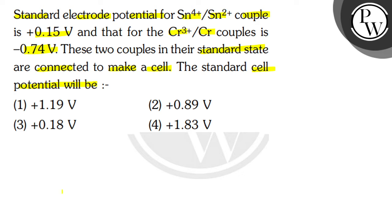Here we have to find out standard cell potential. To solve this question, the key concept used is E⁰cell equals E⁰cathode minus E⁰anode. This will be used to solve this question.